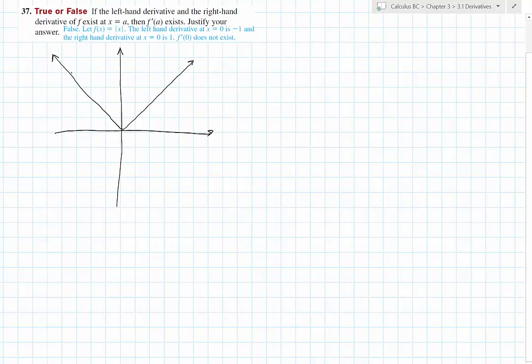The absolute value function, all of the derivatives along here are negative 1. And as I approach the origin coming this direction, taking secant line, secant line, secant line based on those points, all of my slopes are negative 1. So from the left-hand side, the left-hand derivative exists and it's negative 1.